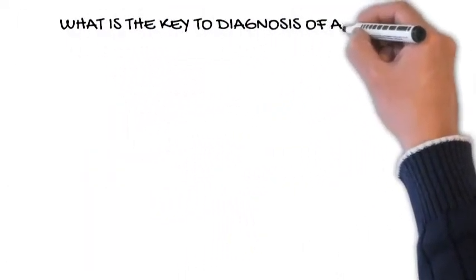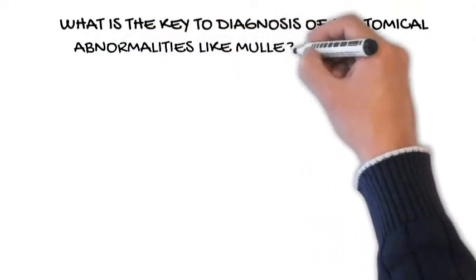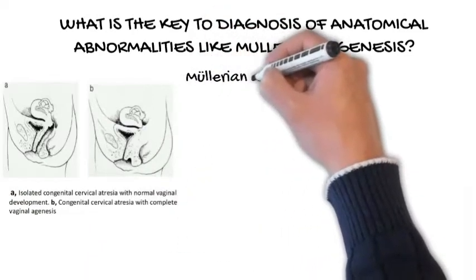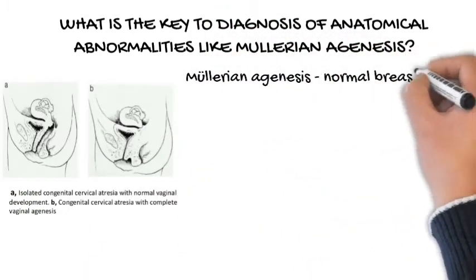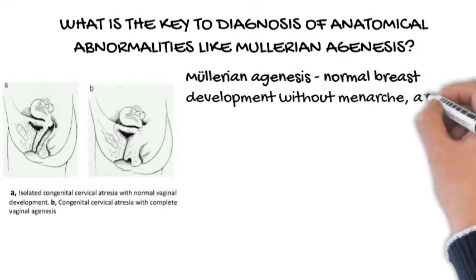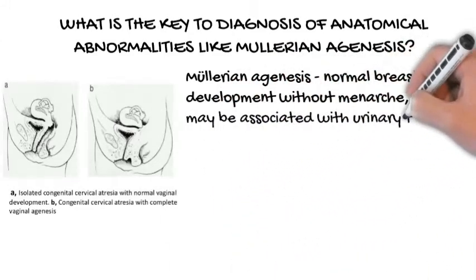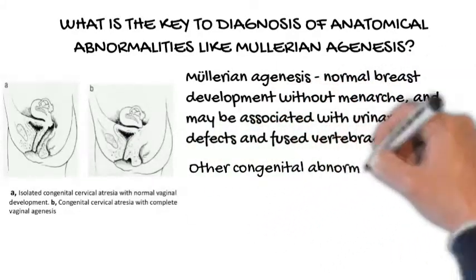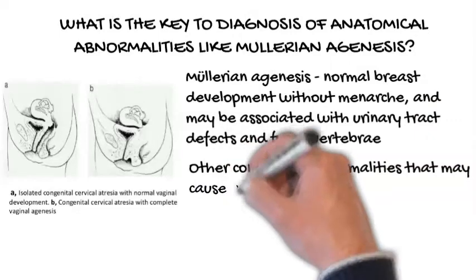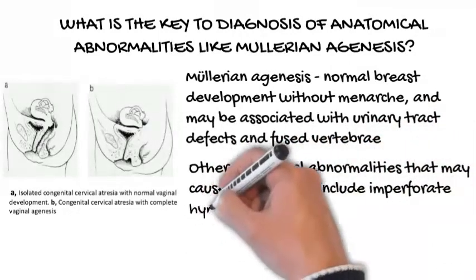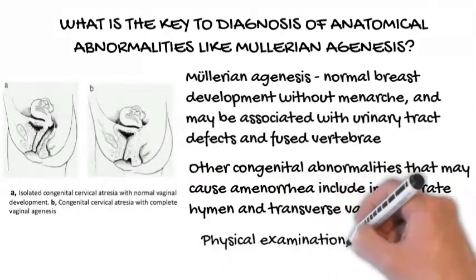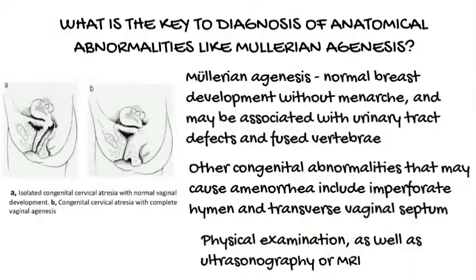What is the key to diagnosis of anatomical abnormalities like Müllerian agenesis? Müllerian agenesis, a condition characterized by a congenital malformation of the genital tract, may present with normal breast development without menarche, and may be associated with urinary tract defects and fused vertebrae. Other congenital abnormalities that may cause amenorrhea include imperforate hymen and transverse vaginal septum. Physical examination, as well as ultrasonography or MRI, is key to diagnosis, and surgical correction is usually warranted.